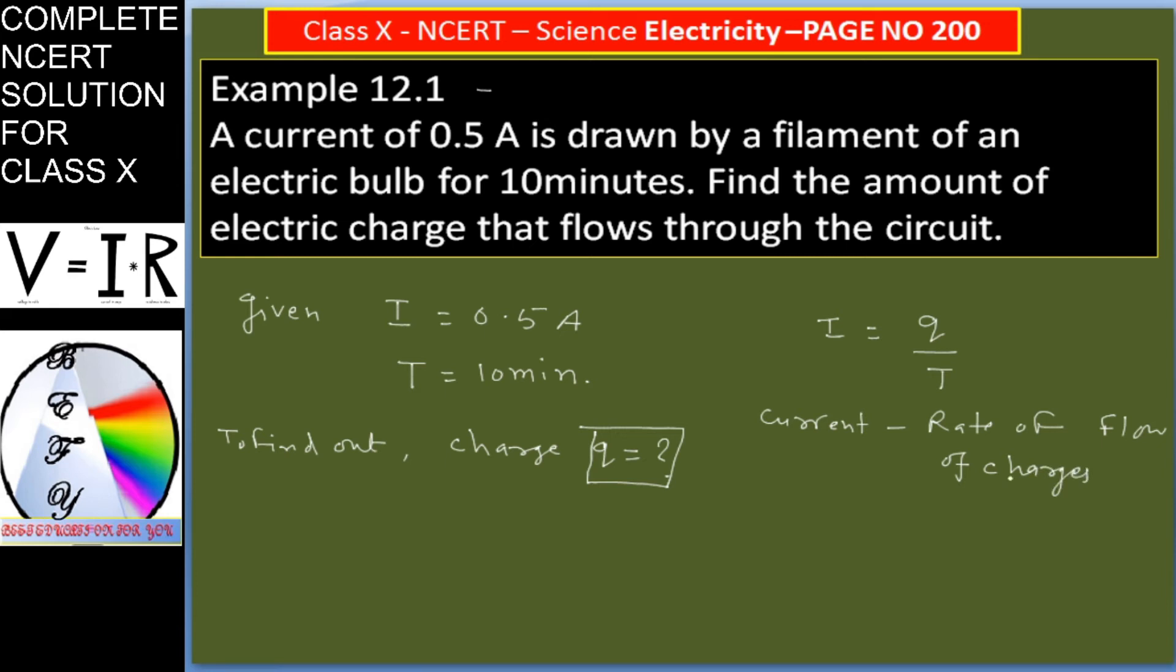From here we have to calculate Q. So Q is I into T. T is given as 10 minutes. It is in minutes, it is not SI unit.